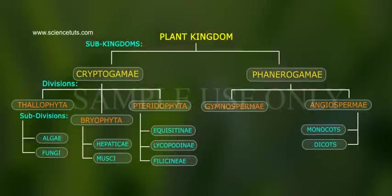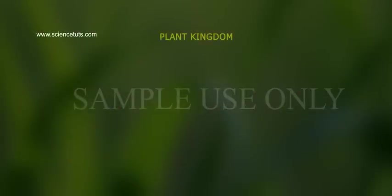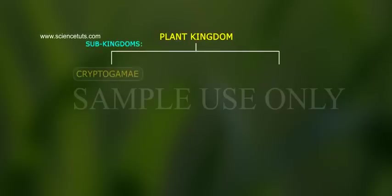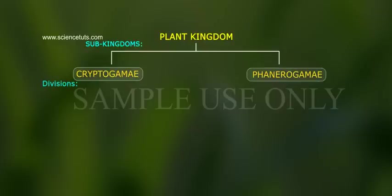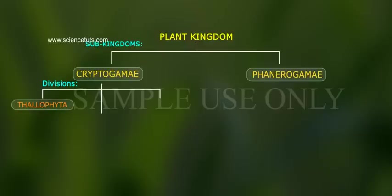See the classification chart proposed by Eichler. The Plant Kingdom is divided into two subgroups: Cryptogamae and Phanerogamae. Subgroup Cryptogamae is divided into three divisions: Thallophyta, Bryophyta, and Pteridophyta.